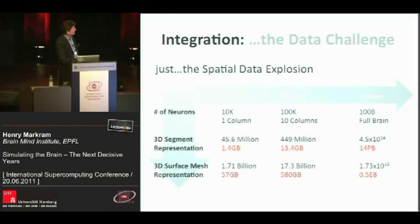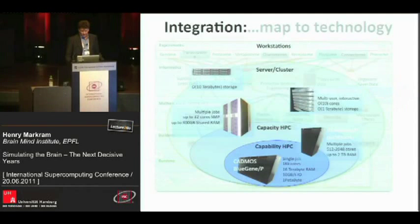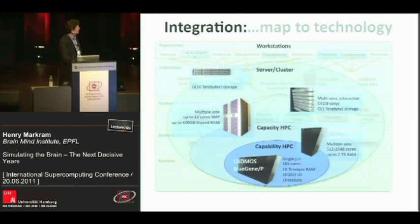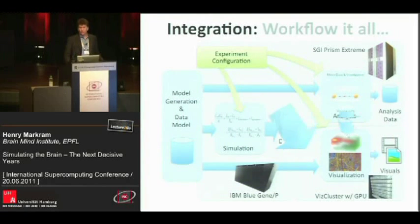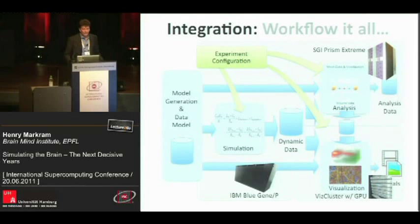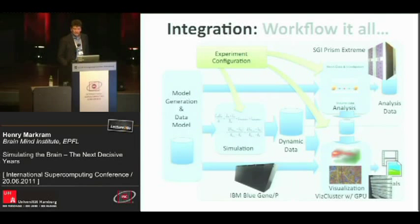It is a massive data challenge. Just looking at the spatial data for a full human brain, you're going to put serious strain on the amount of memory needed. This is our current HPC environment, but it's going to have to expand significantly to get close to this roadmap. You also have to workflow almost everything and create a way to use this quite interactively and easily.